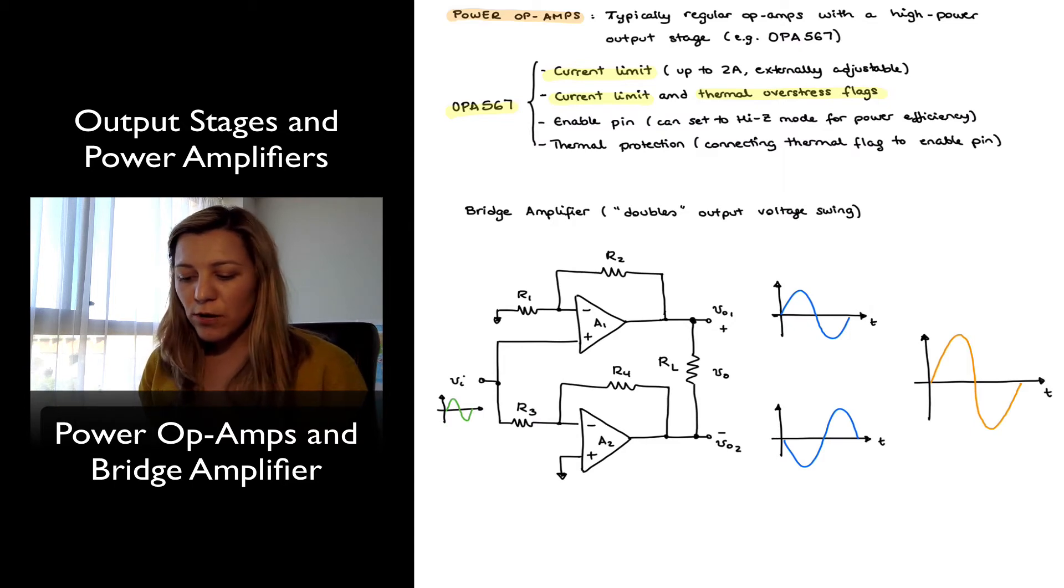There is also an enable pin which has two possible functionalities. It can be set to 1 or 0 depending on the logic, but the idea is that when it is set to enable, then the op-amp just functions as a regular op-amp.